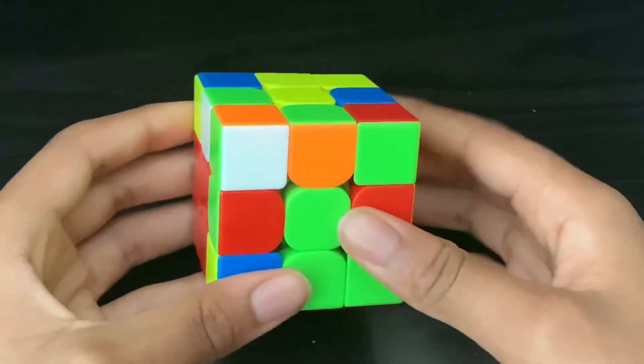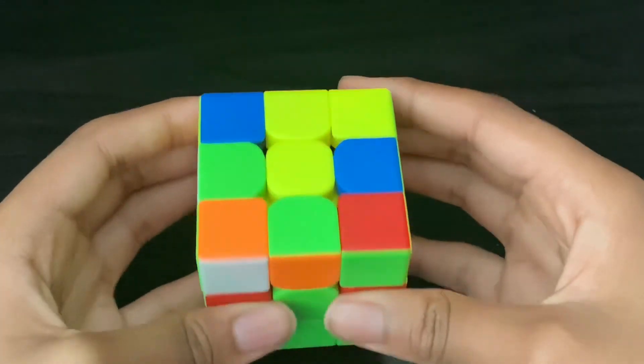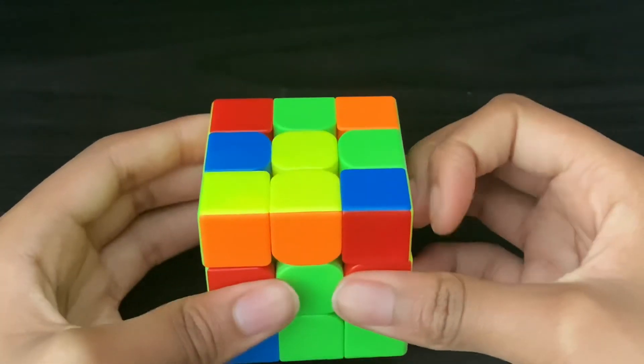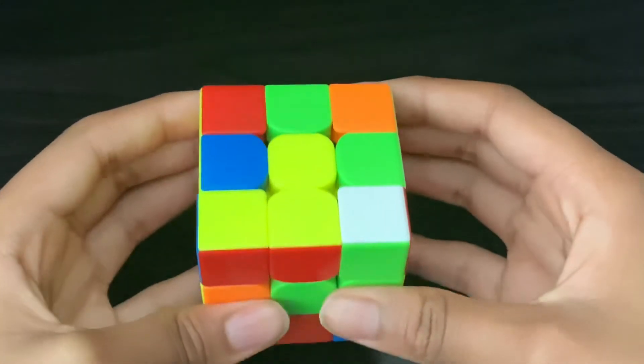We have the first three on the top layer, and we want to put the fourth one on the bottom layer in the DF position. So we need to put these three on top in the back, then we can put this edge down, then we can move the three into the front.